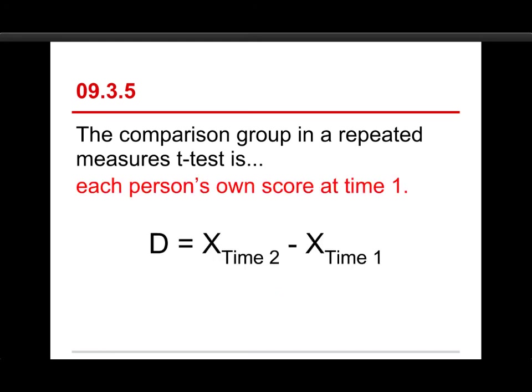The x at time 2 minus the x at time 1. So the time 1 for each person serves as their own baseline, or their own comparison group. And that's the comparison that's being made. The data that's actually being analyzed are the difference scores, but the comparison is with the time 1 score.